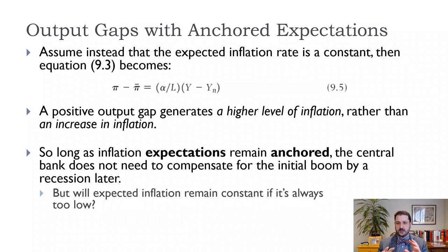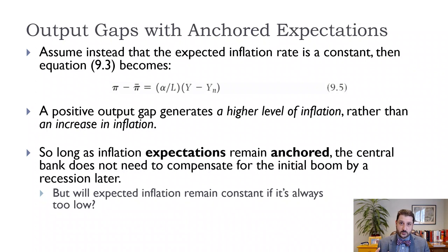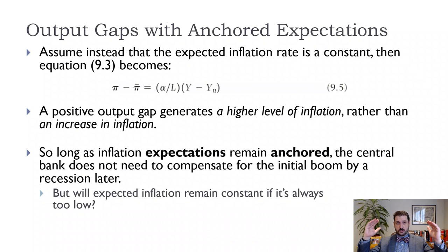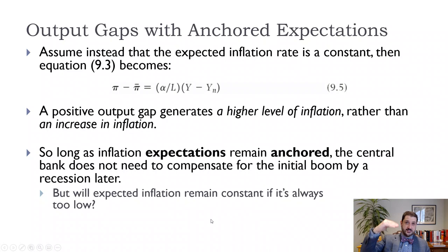The central bank doesn't need to worry about compensating for a boom with a recession later by changing expectations. This is one of the reasons that the Federal Reserve and central banks all over the world take inflationary expectations to be so important. If they let the economy believe that they're going to have higher and higher inflation, it's going to be harder and harder to get back to the natural level of output without a recession. The canonical example of that type of recession is the early 1980s, where inflationary expectations had gotten out of control throughout the 70s, and the Fed basically had to raise interest rates really high to reduce expected inflation.